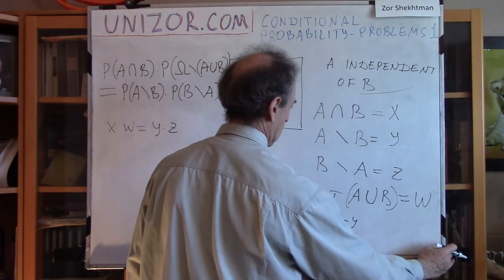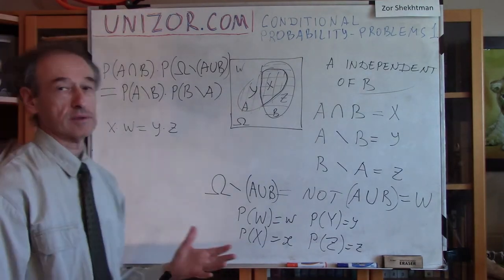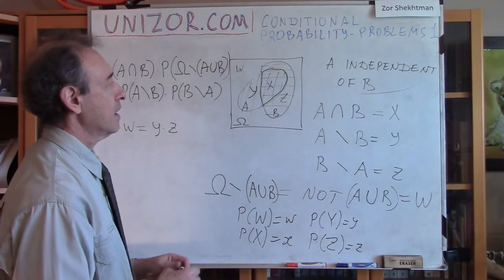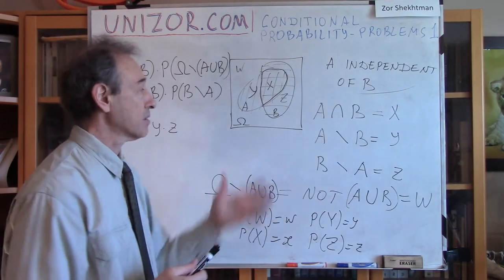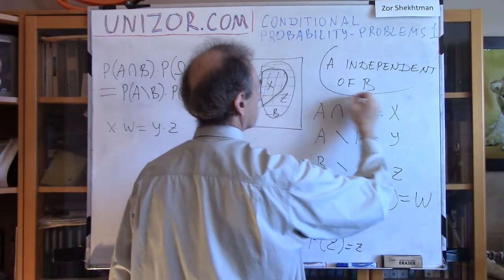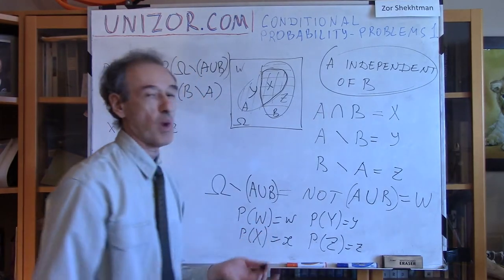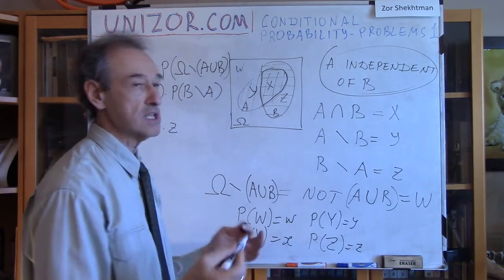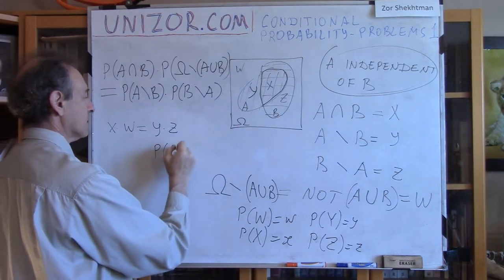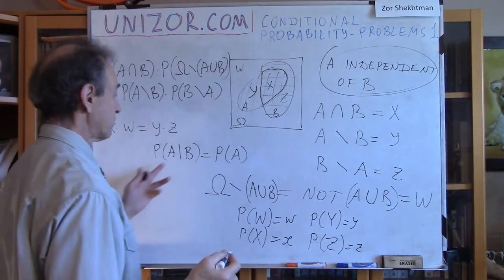So I basically have to prove that x times w equals y times z, where lowercase letters are the corresponding probabilities. This seems much easier, but we still have to prove it. The only thing given — above and beyond the notation — is that A is independent of B. So let's express this independence in terms of X, Y, Z, and W, which is probably the key to everything.